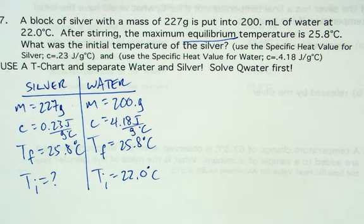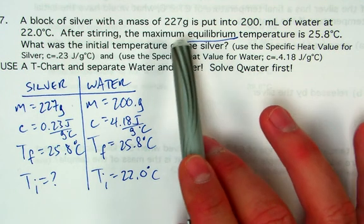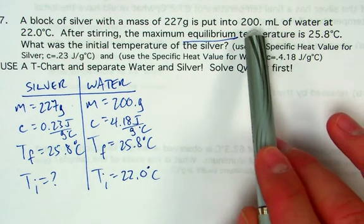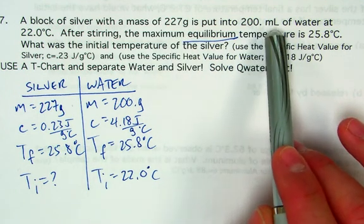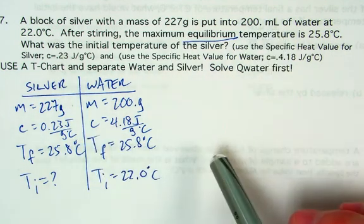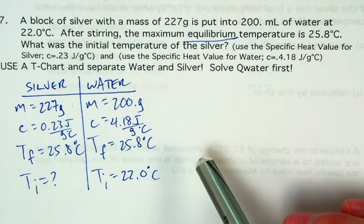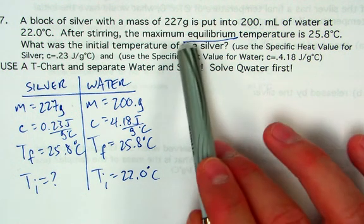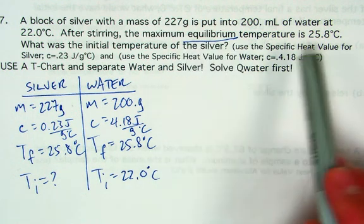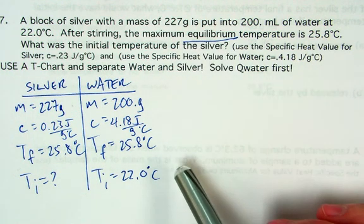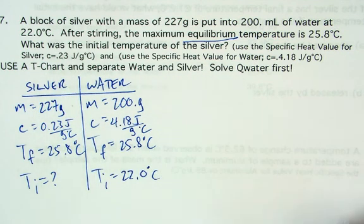As you read through the problem, you'll realize we've got two different substances. We have a block of silver with a mass of 227 grams, put into 200 milliliters of water at 22 degrees Celsius. After stirring, the maximum equilibrium temperature is 25.8 degrees, and we want to find the initial temperature of the silver.